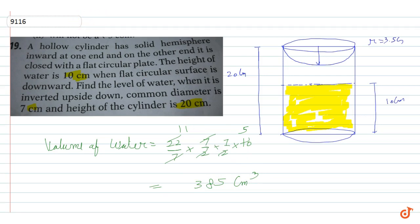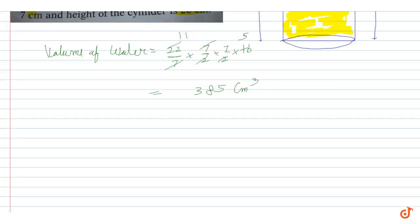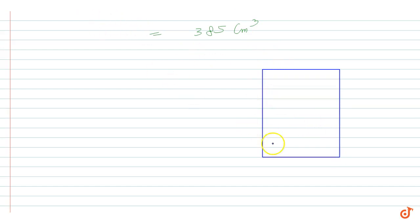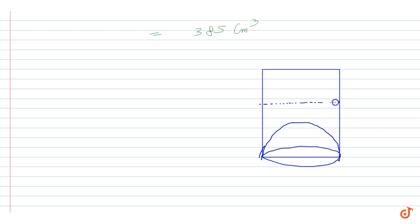Now, find the level of water when it is inverted upside down. In the second case, we have a little difference. The shape is the same, but now the hemisphere has changed position — it was upper before, but now the flat circular shape is on top and the hemisphere is at the bottom. We need to determine the new height. The volume remains the same.